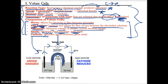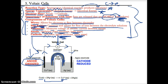The cathode, based on 'red cat,' is where reduction occurs. Based on oil rig, the cathode gains electrons, and since you gain particles, you gain mass. In the Cu/Ag example: Cu is being oxidized to Cu²⁺, so based on anox it is the anode and loses electrons. Ag⁺ is the cathode where reduction occurs and electrons are gained.